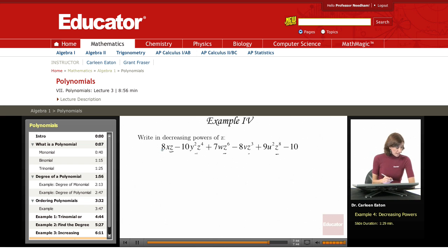Decreasing powers of z means I'm going to start out with the largest exponent, the monomial with the largest exponent with z. So looking through, z to the 8th is the largest, so I'm going to put 9u squared z to the 8th first.